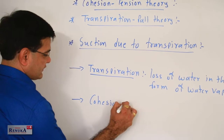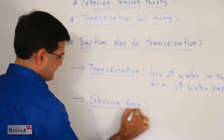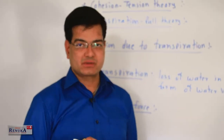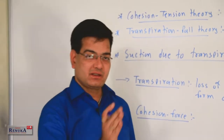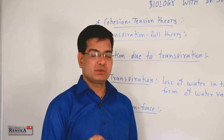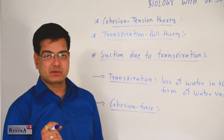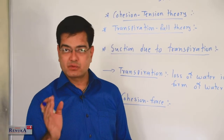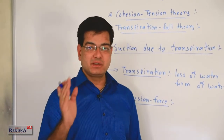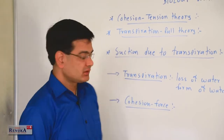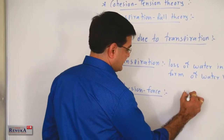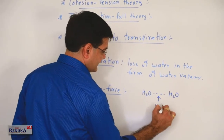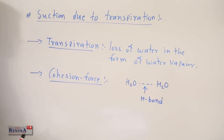One key factor is cohesion force, or cohesion tension — the force of attraction between water molecules. One end of the water molecule is positively charged and the other end is negatively charged. Due to this polarity, water molecules always remain associated with each other by hydrogen bonds. This force of attraction between two similar molecules is called cohesion force.